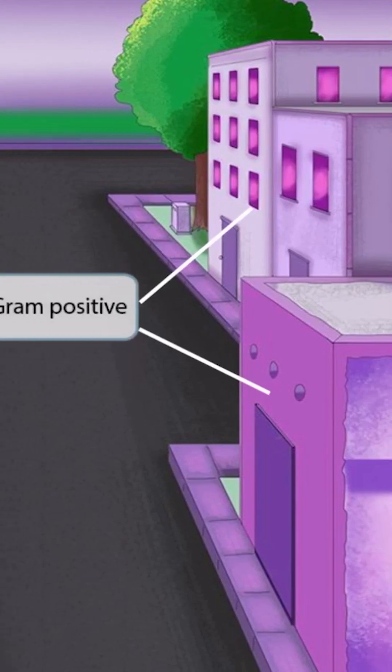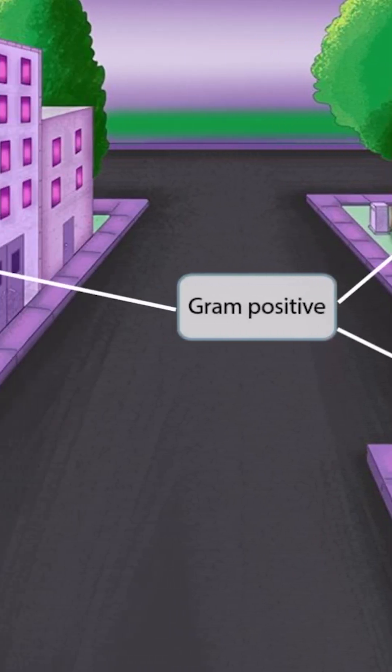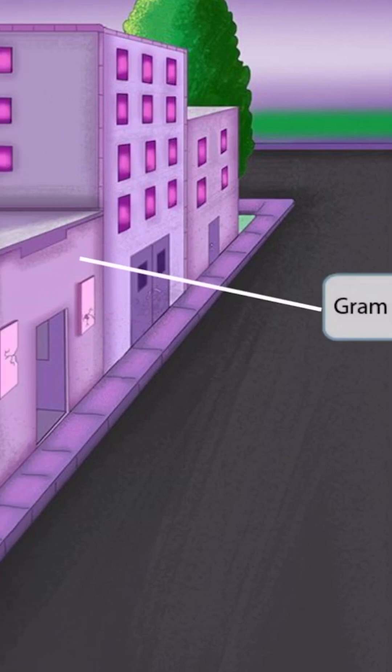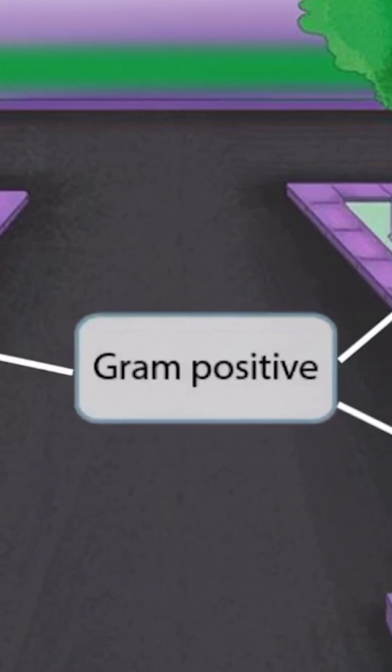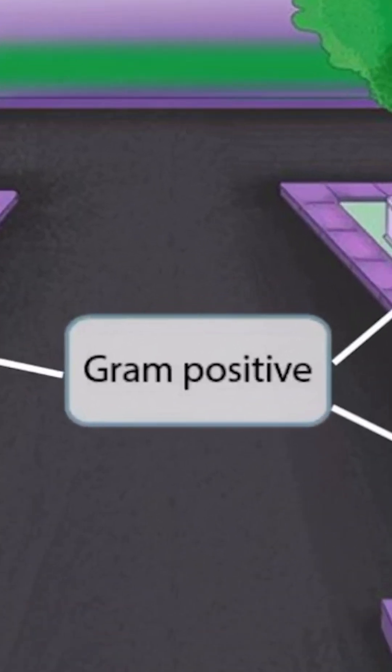Notice that we've intentionally made all of the buildings purple. This is to remind you that Nocardia is a gram-positive organism. Technically, it's weakly gram-positive, and it also weakly stains acid-fast, which we'll talk about in a second.